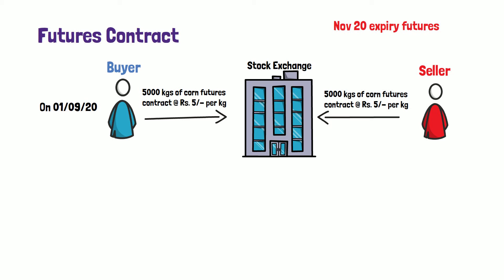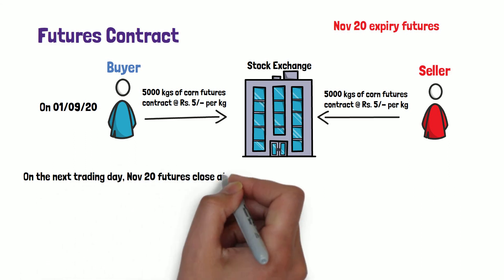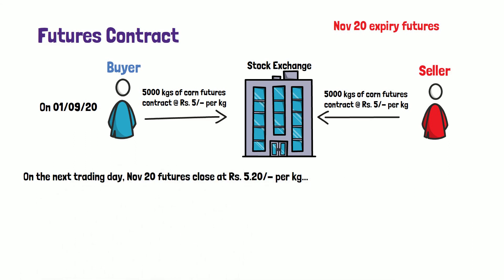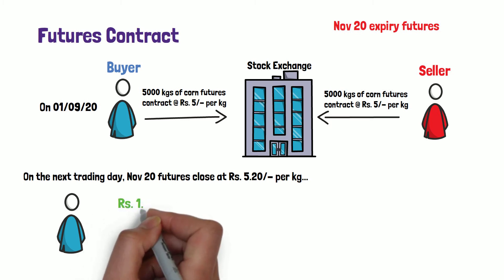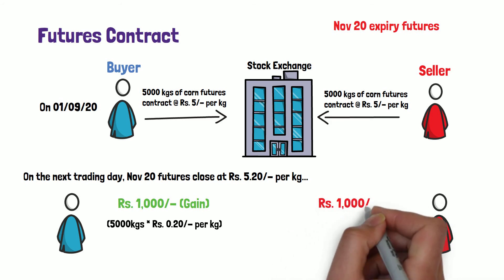These futures are traded on the stock exchange on a daily basis up until their expiry. On the next trading day, November 2020 futures close at rupees 5.2 per kg. Due to this price movement, the buyer is at a gain of rupees 1,000 and the seller is at a loss of rupees 1,000.